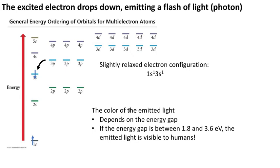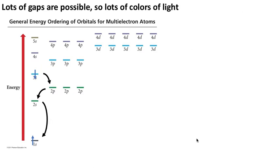The color of emitted light isn't always in the visible range; it totally depends on the energy gap from where the electron was to where it's going. If the energy gap is between 1.8 and 3.6 electron volts, which is a unit of energy, the emitted light is visible to humans. There are lots of gaps possible, so there are lots of colors of light that you might get out of a Geißler discharge tube.